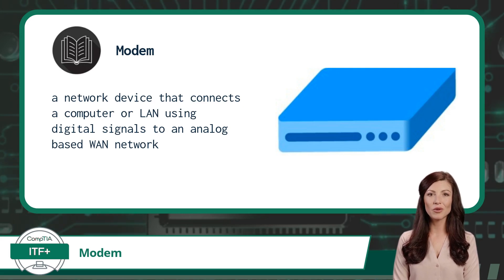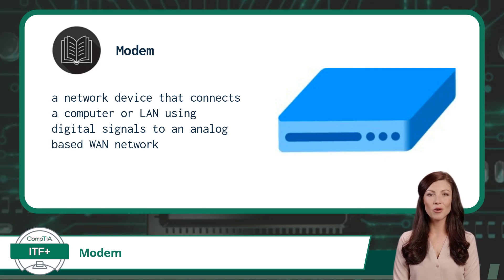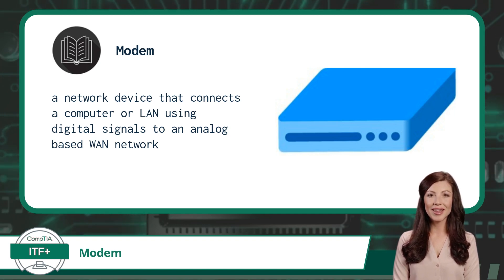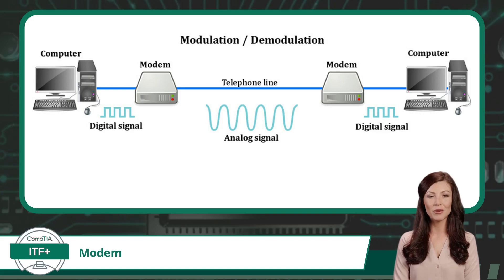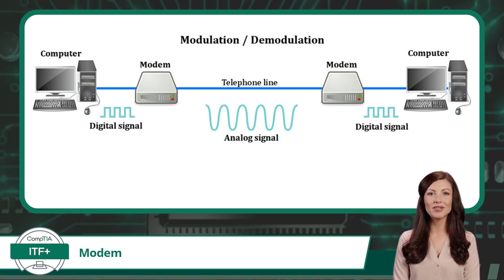So what is a modem? A modem is a network device that connects a computer or LAN using digital signals to an analog-based WAN network. It serves as a bridge between the digital signals used by computers and the analog signals used by communication lines, such as telephone lines or cable lines. Consider a modem to be the gateway between your computer and the vast world of the internet — it's the first point of contact that enables your computer to access online resources and services.